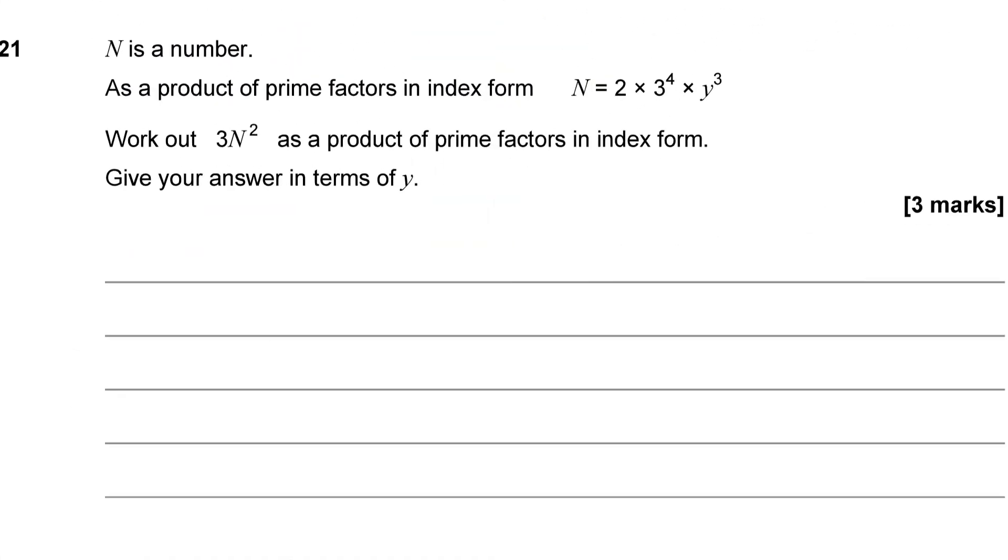Question 21, n is a number. As a product of prime factors in index form, n is equal to 2 times 3 to the power of 4 times another number y to the power of 3. Work out 3n squared as a product of prime factors in index form. Give your answer in terms of y. So, we know that n is 2 times 3 to the power of 4 times y to the 3, so if I want to work out 3n squared, I'm going to be taking n, I'm going to multiply it by 3, so 3 lots of 2 times 3 to the power of 4 times y cubed. And then I'm going to square it.